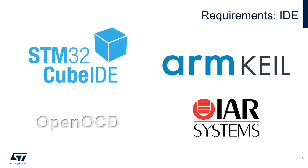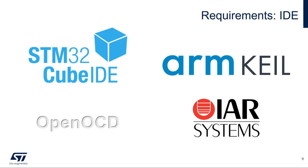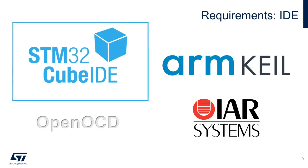To ensure dual debug, the debugger must have the following attributes: access port selection capability, visibility of all cores, simultaneous multiple core connection capability using the same debug probe, support for cross-trigger ARM components, and the possibility to switch between access ports during the same debug session to visualize the memory and the peripheral statuses in other domains. The IDEs listed here are all capable of dual-core debugging with the STM32H7X5 and X7. Today, we'll be focusing on the STM32Cube IDE.